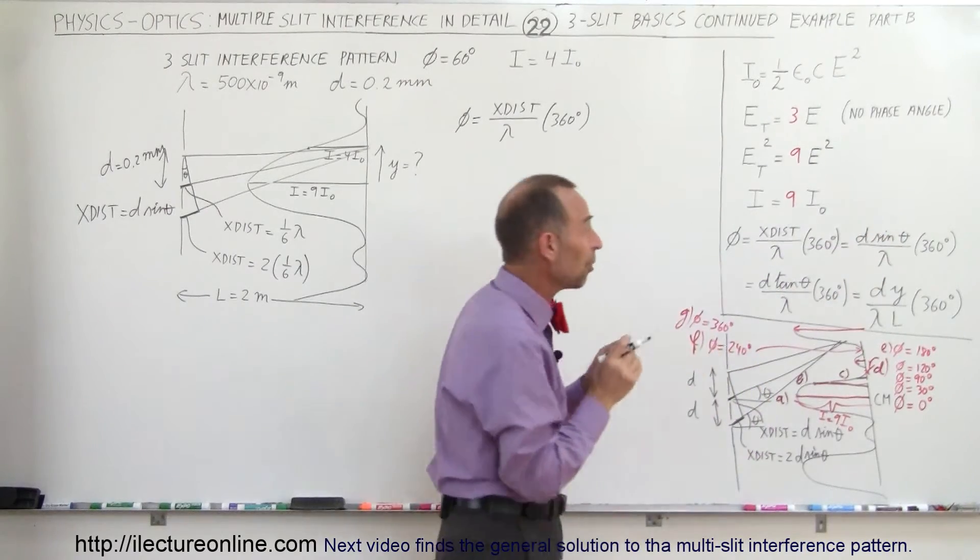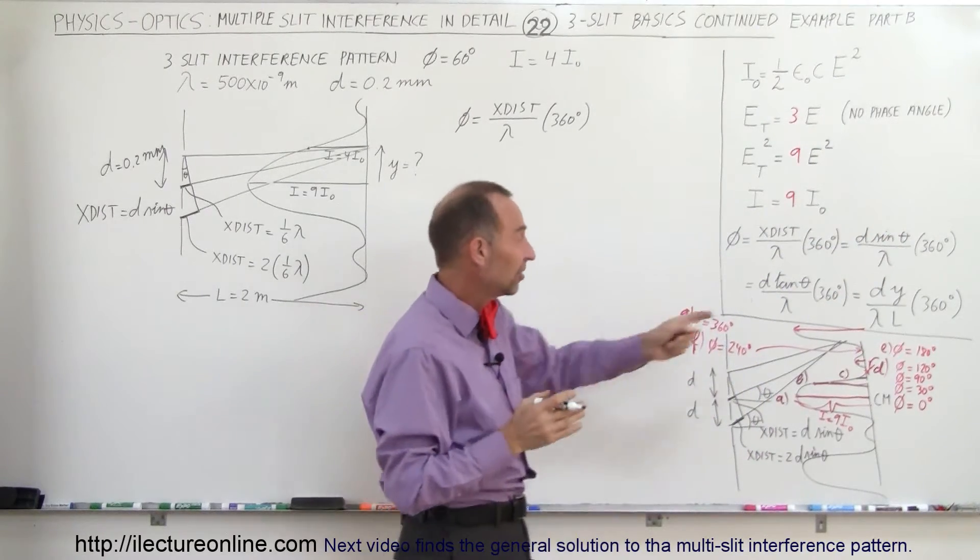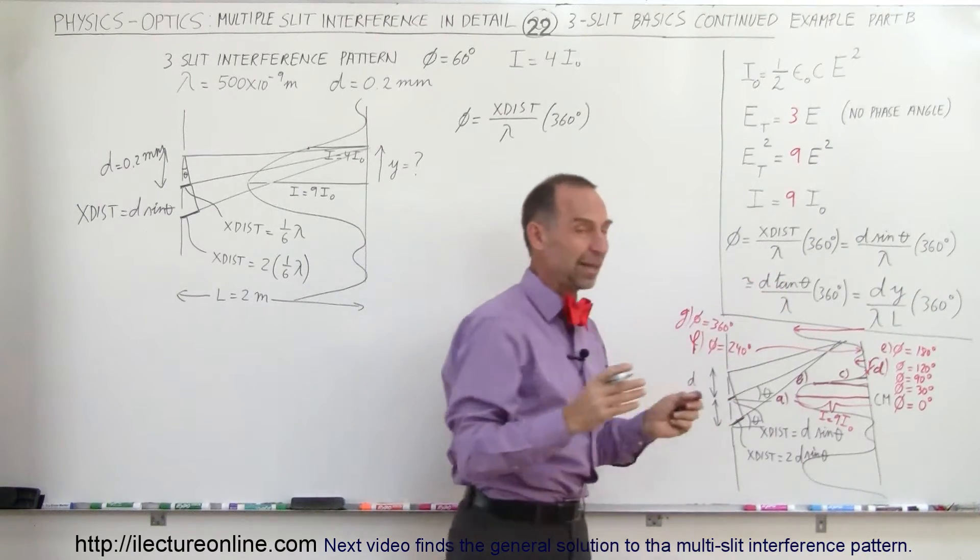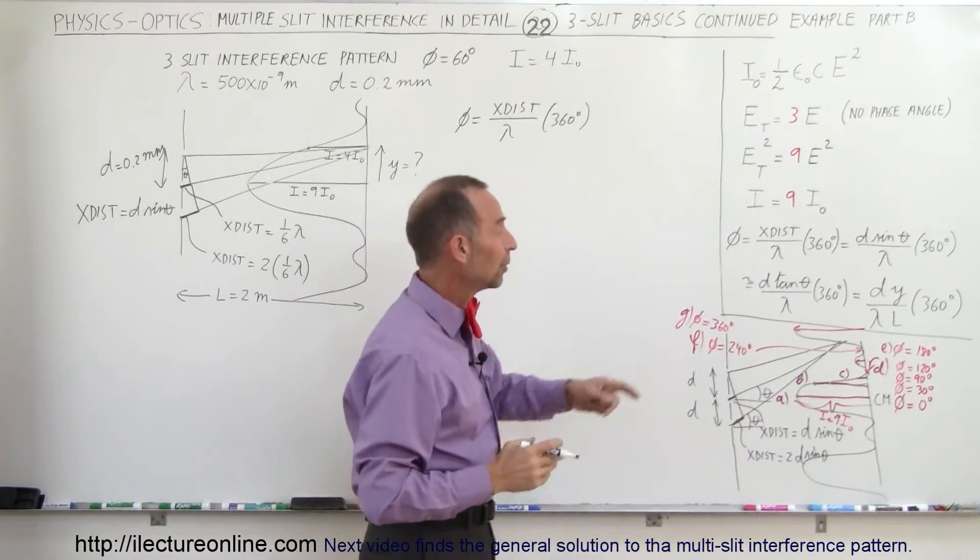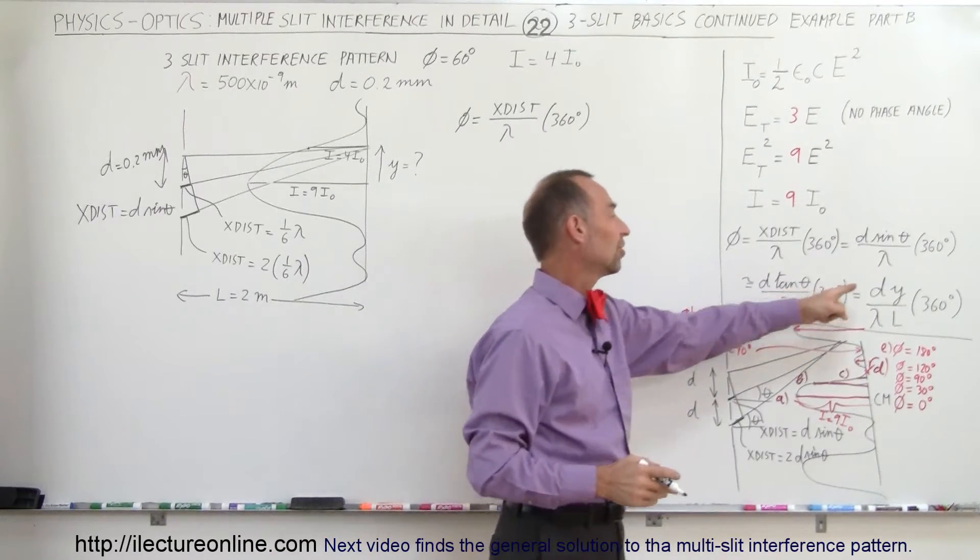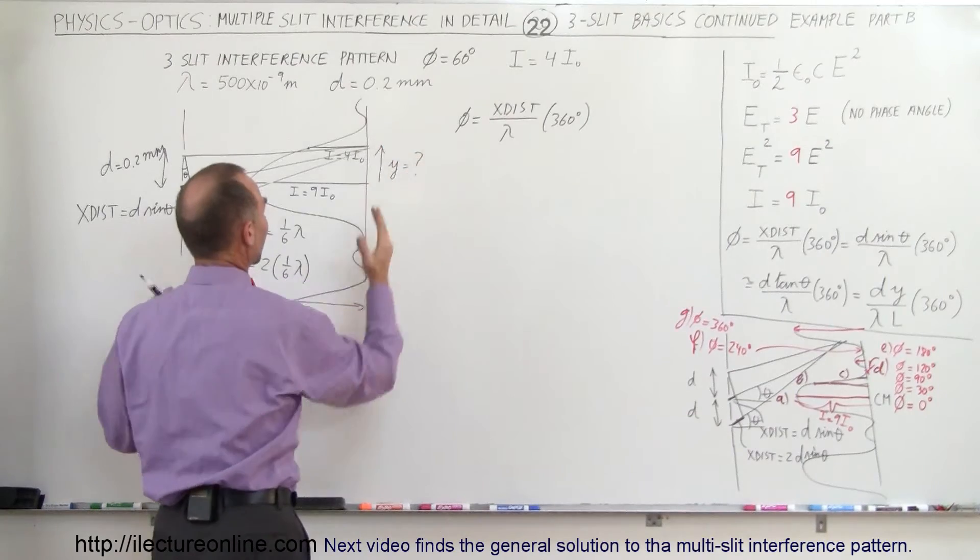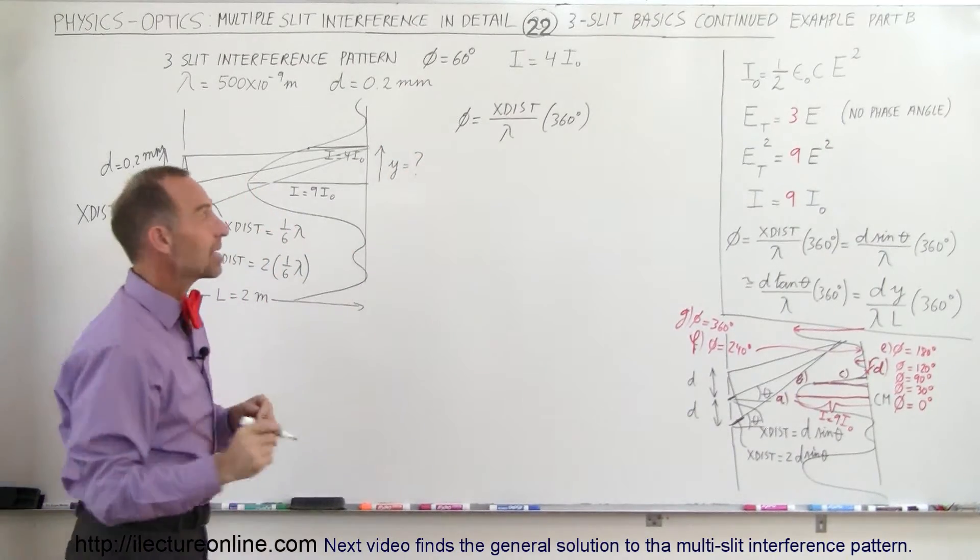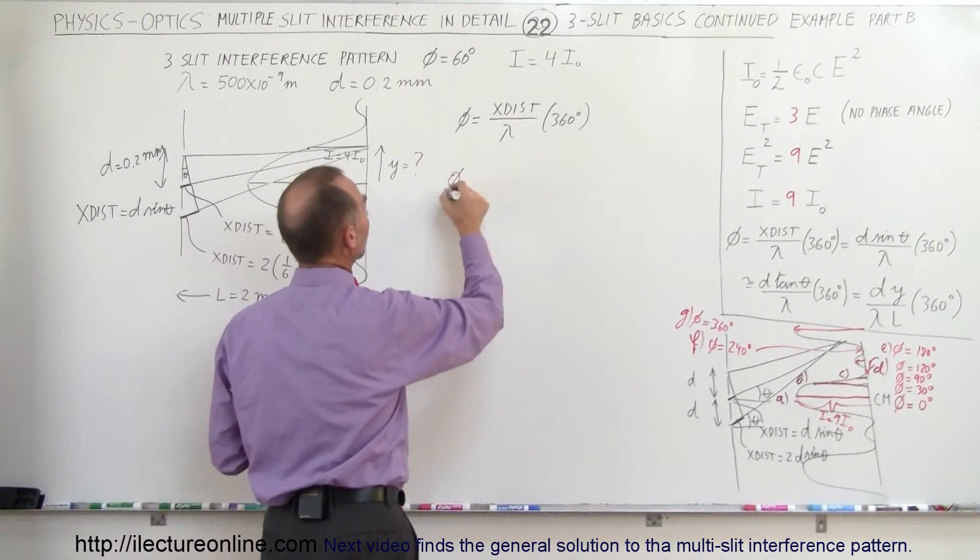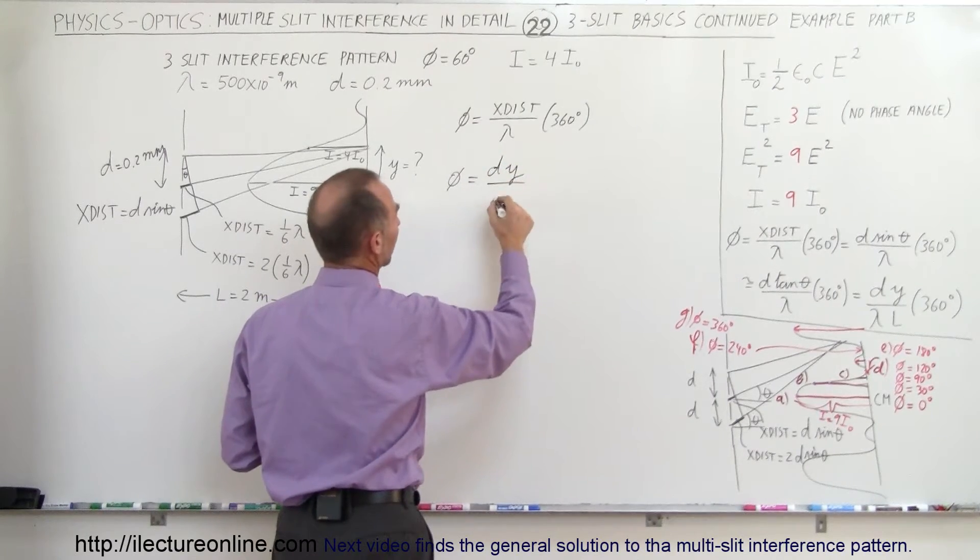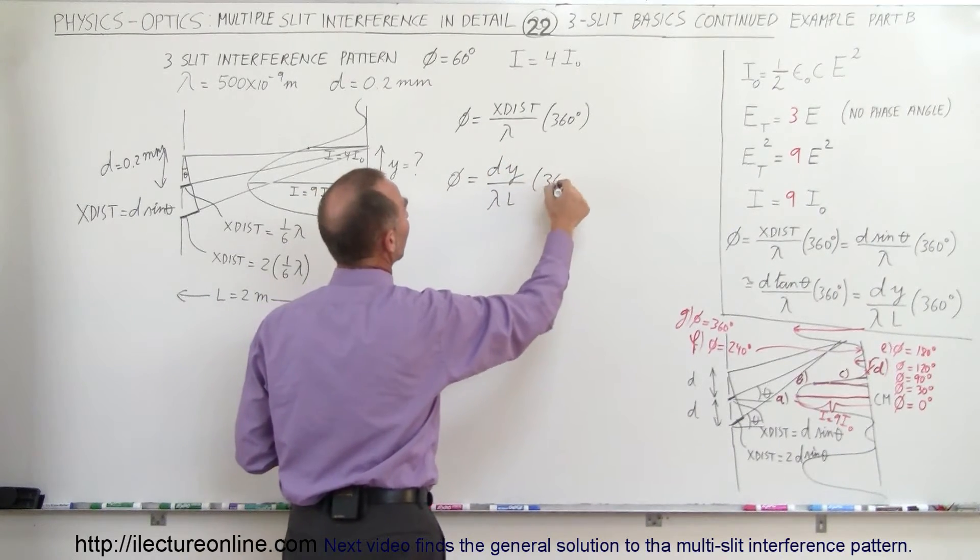Now since these are very small angles, the sine of theta is approximately equal to the tangent of theta. And we also know that the definition of the tangent is the opposite side over the adjacent side, so it would be y divided by L. So what we can say here is that phi can also be described as d times y over lambda times L times 360 degrees.